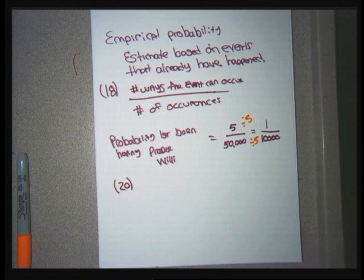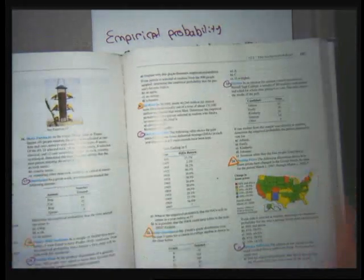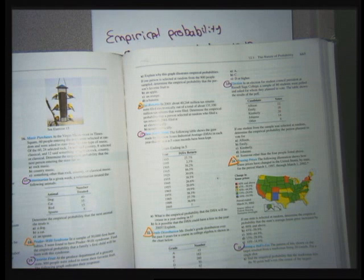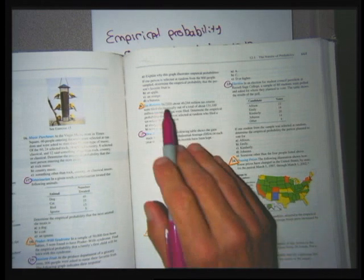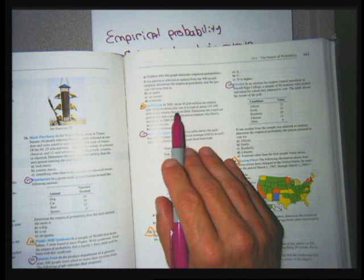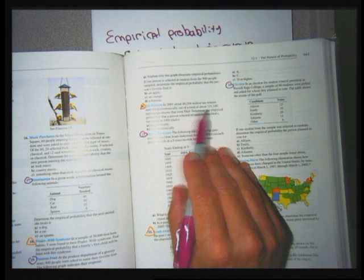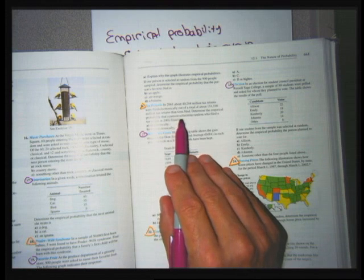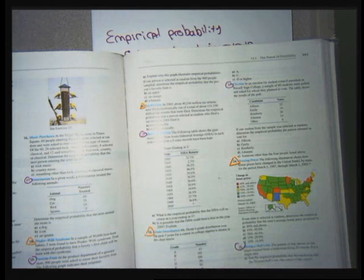Problem 20 talks about tax returns. In 2001, about 40,244 million tax returns were filed electronically out of 131,100 million total returns filed. Determine the empirical probability that a randomly selected person who filed a tax return filed: A, electronically; B, non-electronically. I want to form a fraction. For part A, the probability that a return was filed electronically has the number of returns filed electronically in the numerator, divided by the total number of returns filed.